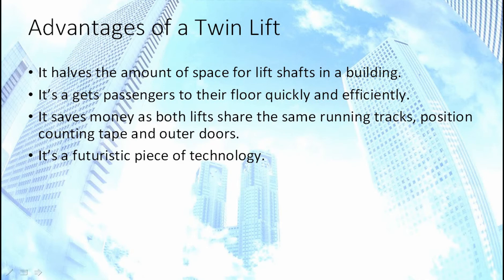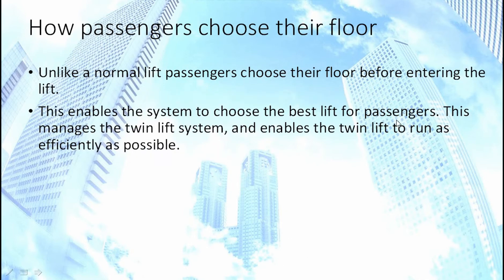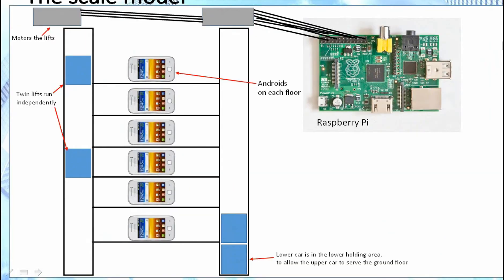It saves money as both lifts share the same running tracks, position counting tape, and outer doors. Most of all it is a futuristic piece of technology. How passengers choose their floor: unlike a normal lift, passengers choose their floor before entering the lift. This enables the system to choose the best lift for passengers and manage the twin lift system as efficiently as possible.